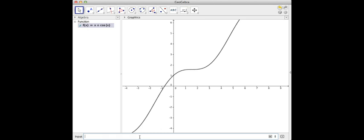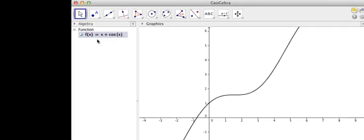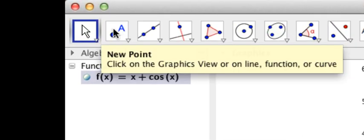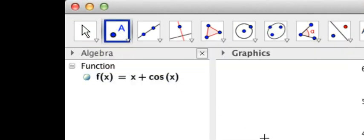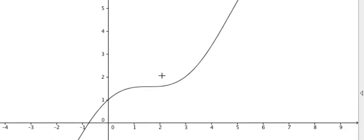Let's see how to place a point on this function. There are two ways to do this. One way is to use the toolbar up at the top of the screen. Go up and select the new point tool, then just go over to the function in the graphics view and click on the graph of the function in the place where you want to put the point.